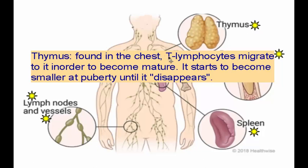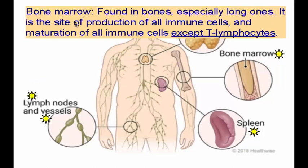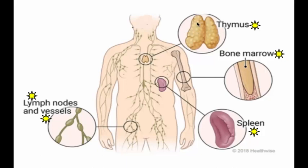Each of these organs has a special function. The thymus, found in the chest, is the site of maturation of the lymphocytes. The bone marrow, found inside the bones, is the site of production of all immune cells — all the immune cells we will discuss are born in the bone marrow. It is also the site of production of blood cells like red blood cells, and the site of maturation of immune cells, except the lymphocytes, which mature in the thymus. T lymphocytes are produced in the bone marrow but migrate to the thymus to mature.